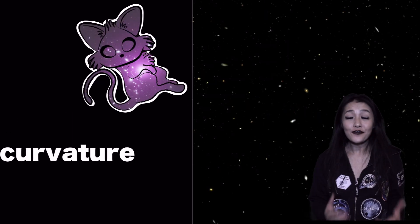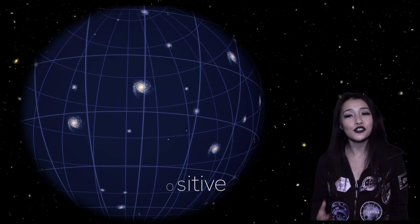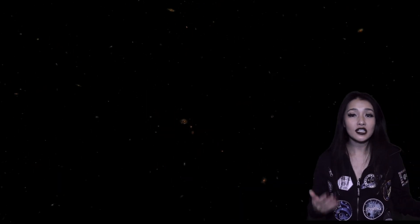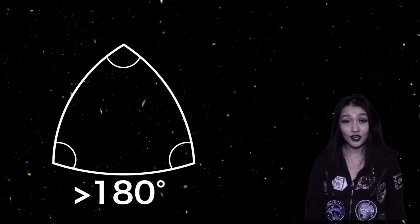The shape of the universe and hence its curvature can take on three different values, and they depend on how much matter there is in it. If the density of matter in the universe is very high, the universe curves into a sphere or an ellipsoid and the curvature parameter is positive. This is what we call a closed universe, and in such a scenario, objects traveling in parallel lines would eventually converge together and the sum of angles of any triangle drawn on the surface is always greater than 180 degrees.